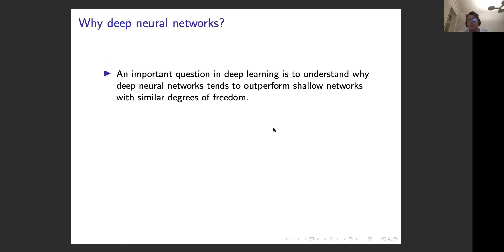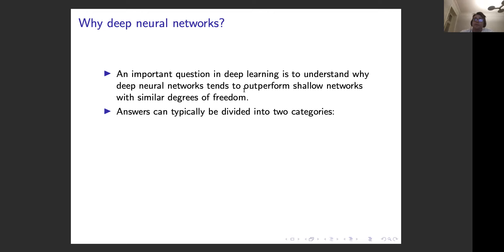A question that has been around for quite some time in the deep learning community is to understand where the success of deep neural networks comes from. We know from empirical work that most of the time deep networks outperform shallow networks, even if they have similar degrees of freedom — similar complexity — but deep networks still do better. There have been many studies devoted to this question, and the answers can roughly be divided into two categories.